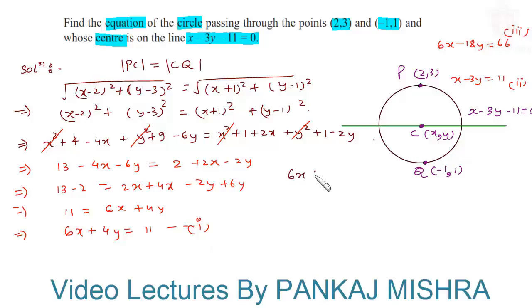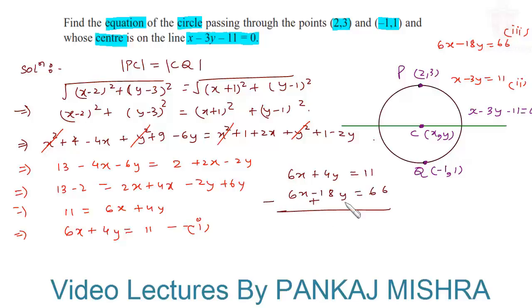Subtracting Equation 3 from Equation 1: the 6x terms cancel each other. We get 4y plus 18y equals 11 minus 66, so 22y equals minus 55.